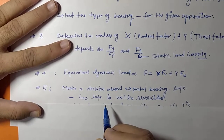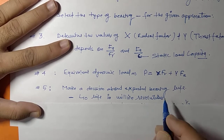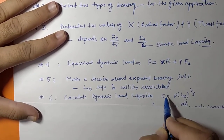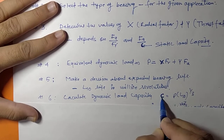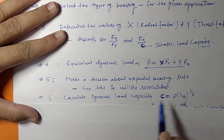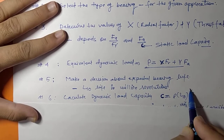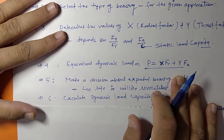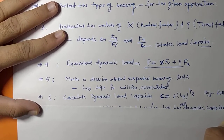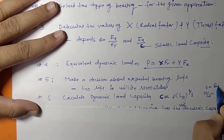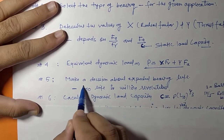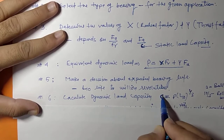The expected bearing life must be expressed as L10 life in million revolutions. Using this life, we calculate the dynamic load capacity C using the relationship C = P · (L10)^(1/3) for ball bearings, or C = P · (L10)^(10/3) — i.e., exponent 1/(10/3) = 0.3 — for roller bearings.